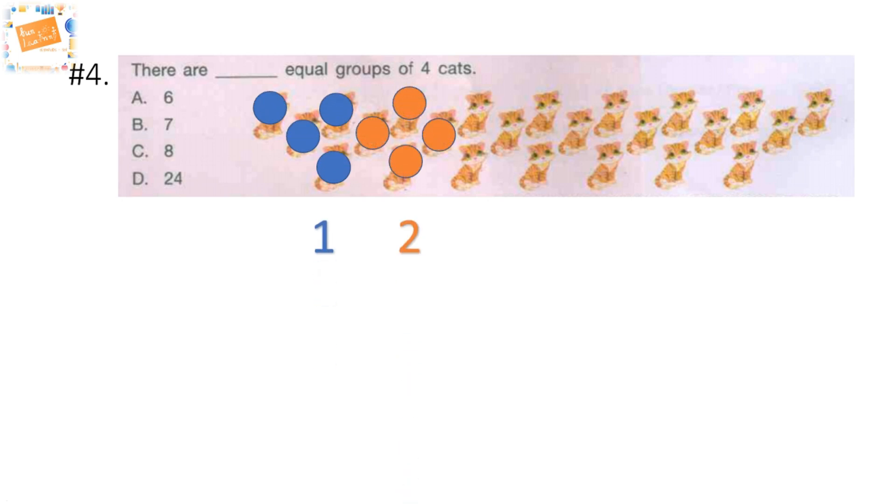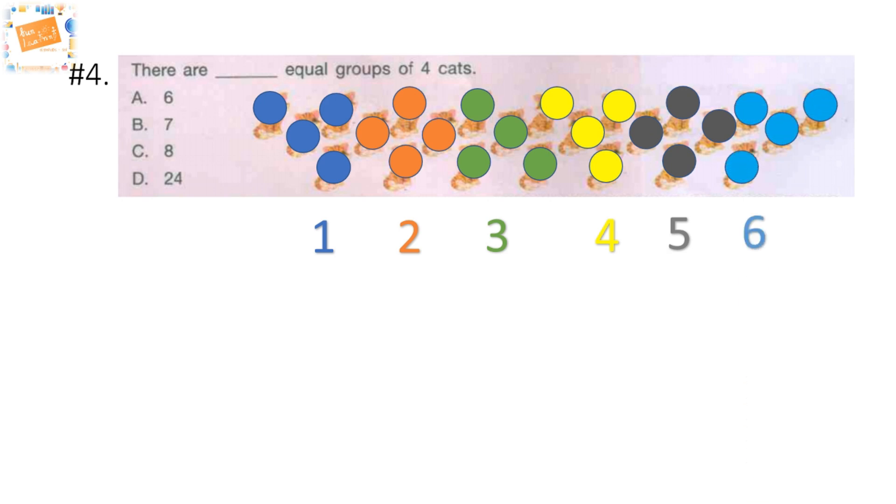The second four gives us the second group. Third four cats give us the third group. The next four, the fourth group, fifth group, and six groups. So our answer is option A: six equal groups of four cats.